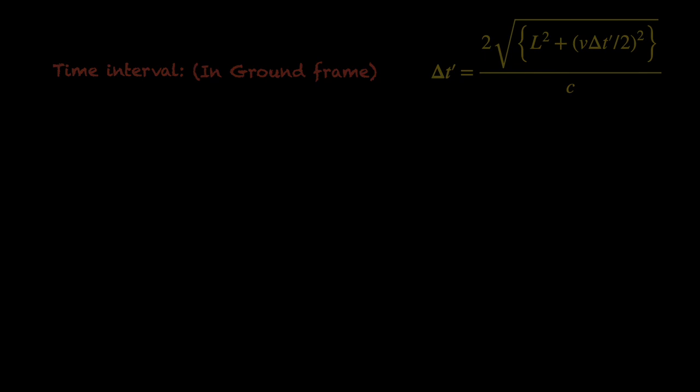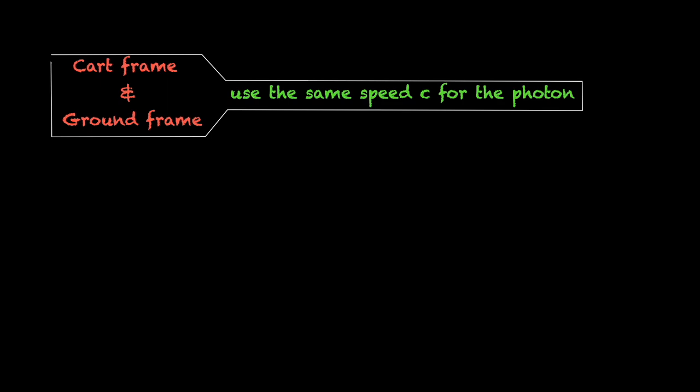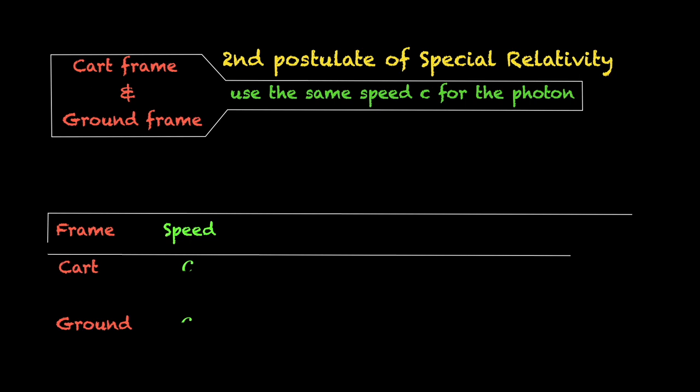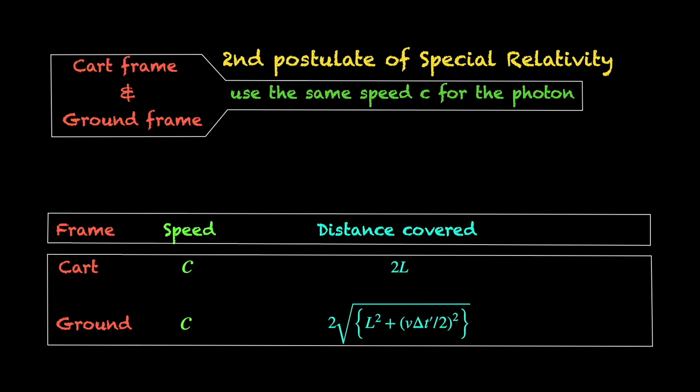The unusual thing is, they also use the same speed c for the photon as the observer on board the cart did. Why? Because that's what the postulates of relativity says. The speed of photon is universally the same for all observers, the one on board the cart and those on the ground. So, basically, they agree on the speed, but the ground observers say that the photon covers a longer distance than what the cart observer claims.